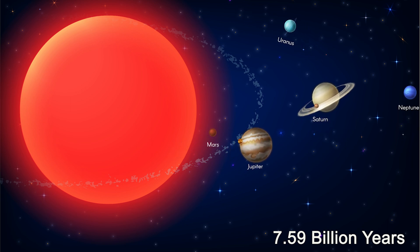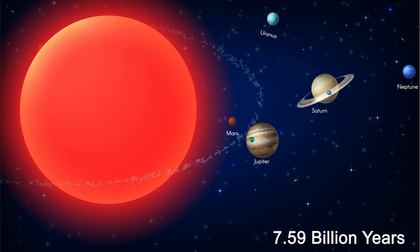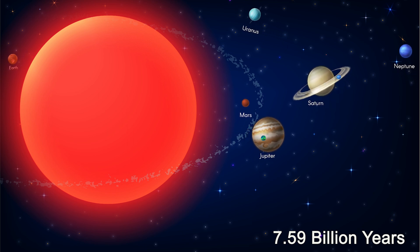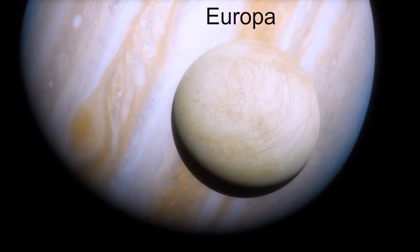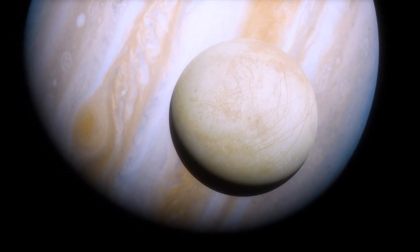The moons of these planets could have their icy surfaces melted, potentially creating environments that could support life, at least for a time. For example, Europa, a moon of Jupiter, is thought to have a subsurface ocean of liquid water.